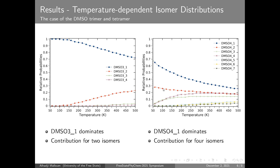For the case of the tetramer, we found that among all the located isomers, only four of them are contributing to the population of the clusters, while the remaining isomers are also negligible.